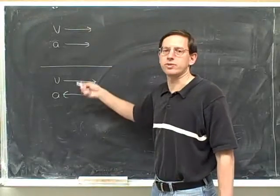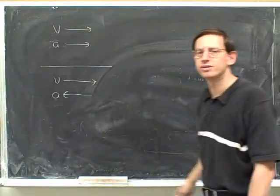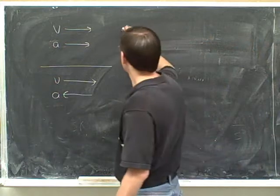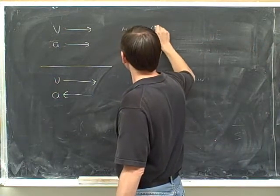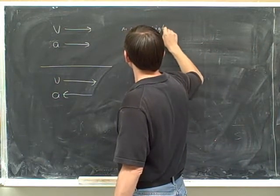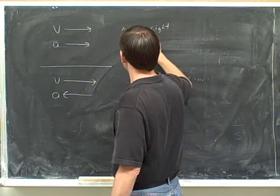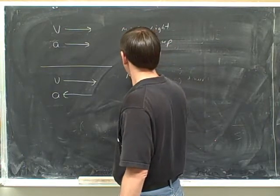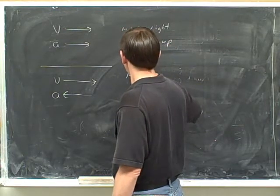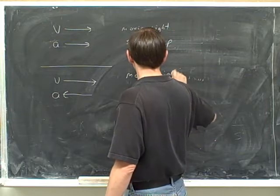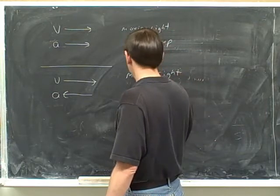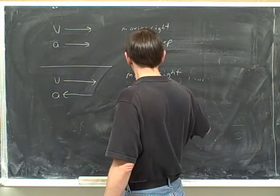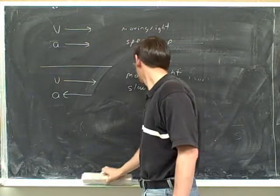Write down everything we can about these two objects. Here we are moving right and speeding up. Here we are moving right and slowing down.